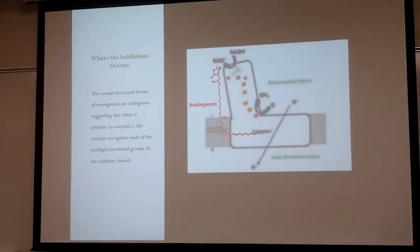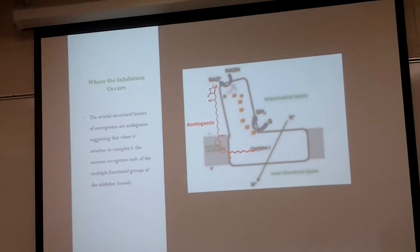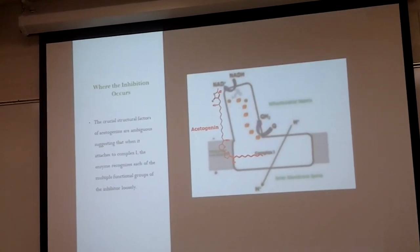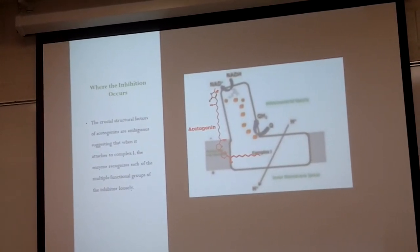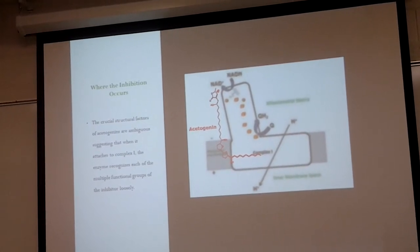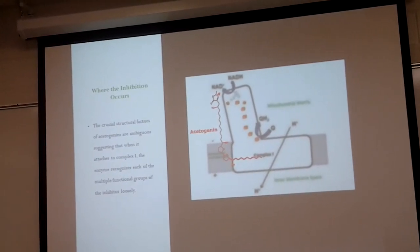As you can see, the crucial structural factors of the acetogenins are ambiguous, suggesting that when it attaches to complex I, the enzyme recognizes each of the multiple functional groups of the inhibitor.